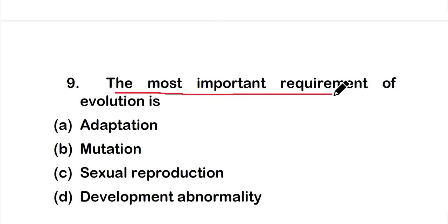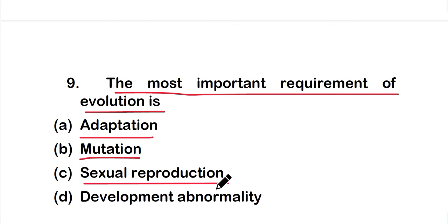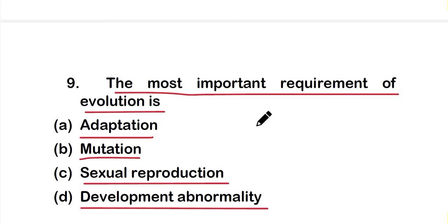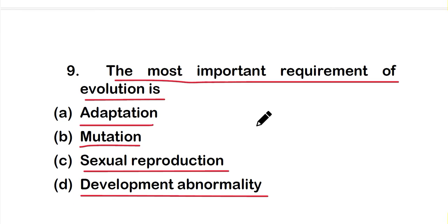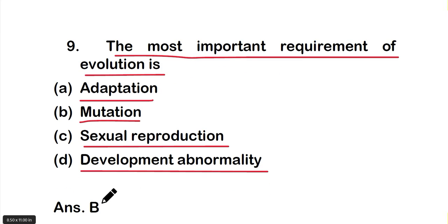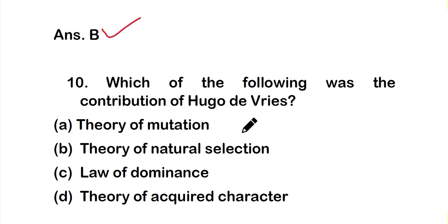Question 9: The most important requirement of evolution is — option A: adaptation, option B: mutation, option C: sexual reproduction, or option D: developmental abnormality. The correct answer is option B — mutation. Mutation is the most important requirement of evolution.